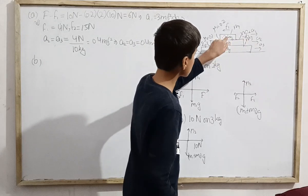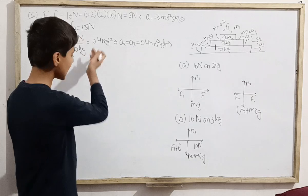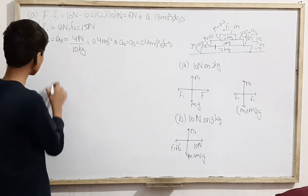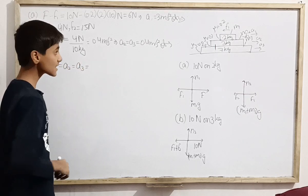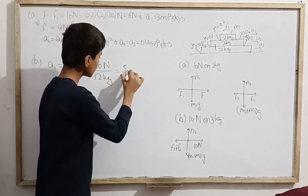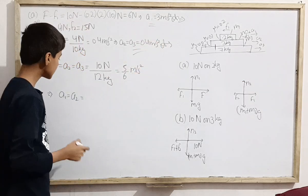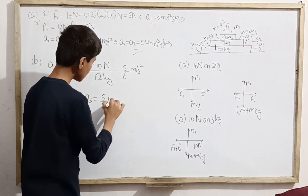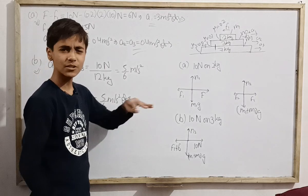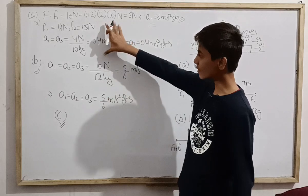F1 plus F2 — that is 19 Newton — is far greater than the applied 10 Newton, so the 3 kg block tries to move in the direction of 2 and 7. So all three will have combined mass and move in the same direction. The driving force is 10 Newton divided by total mass of 12 kilogram, that is 5 over 6 meter per second square. In this case, A1, A2, and A3 are all the same: 5/6 meter per second square. This is our final answer for case B.